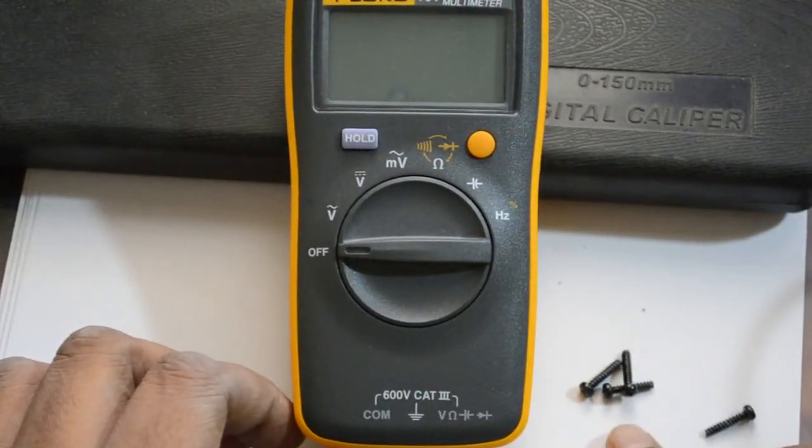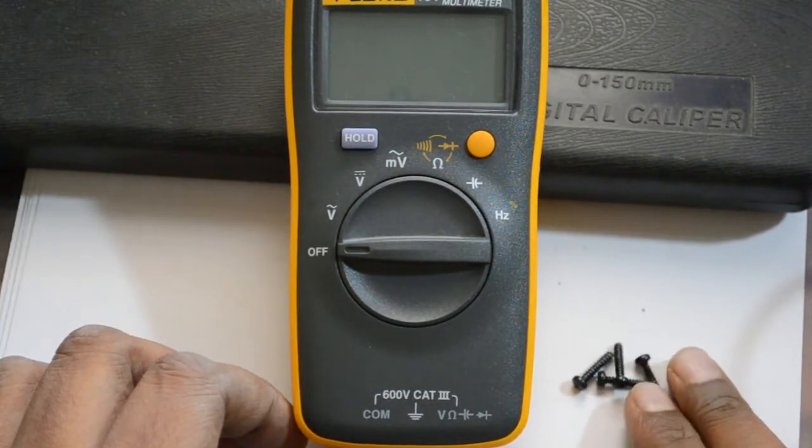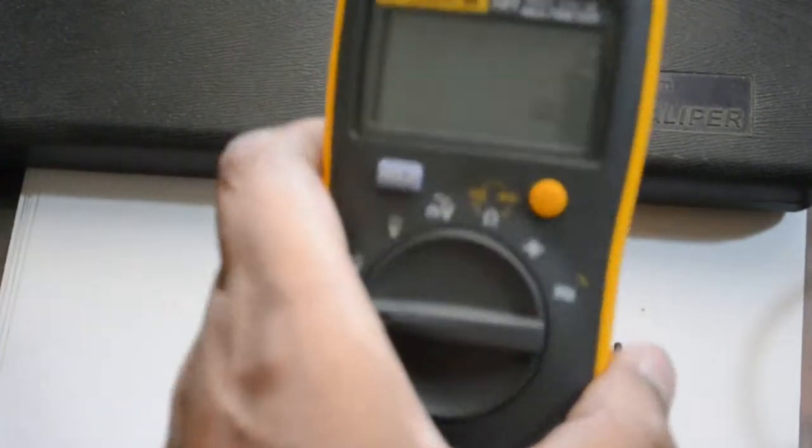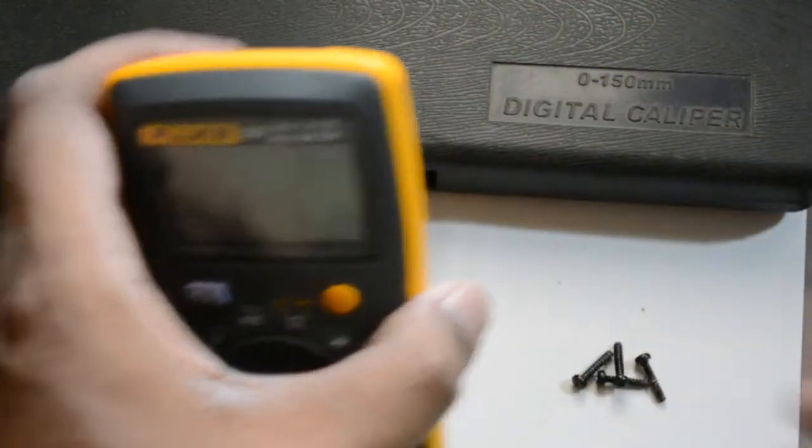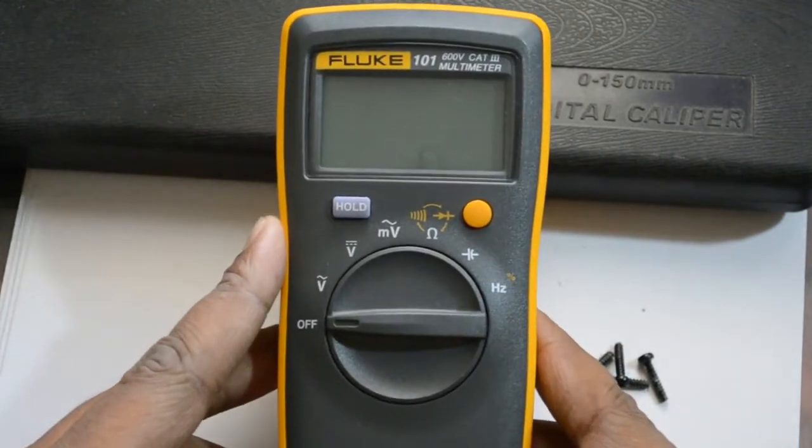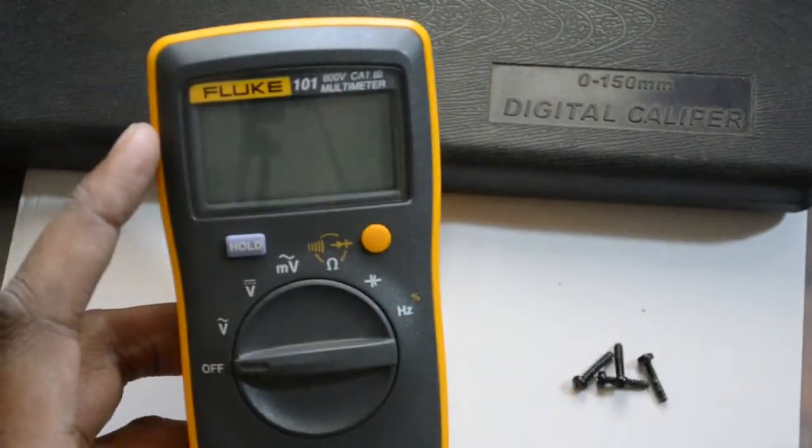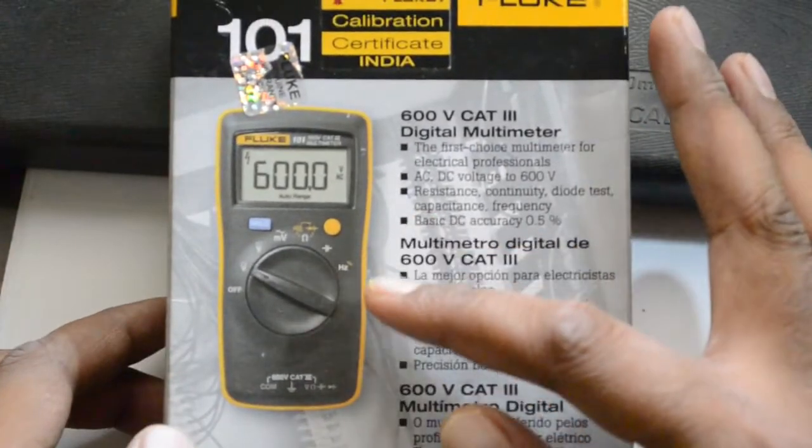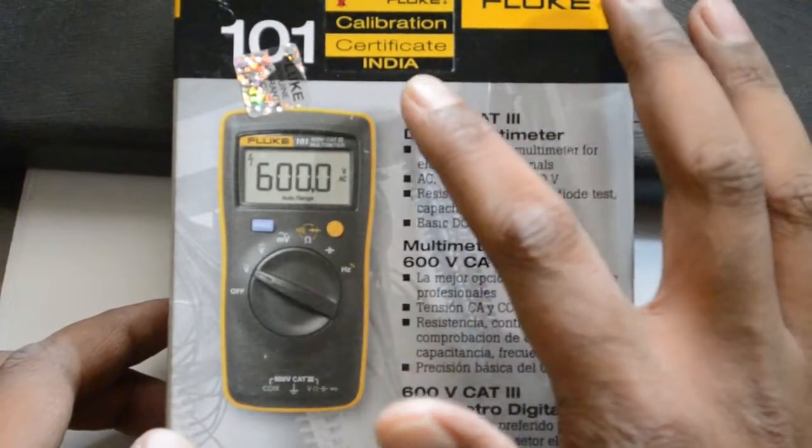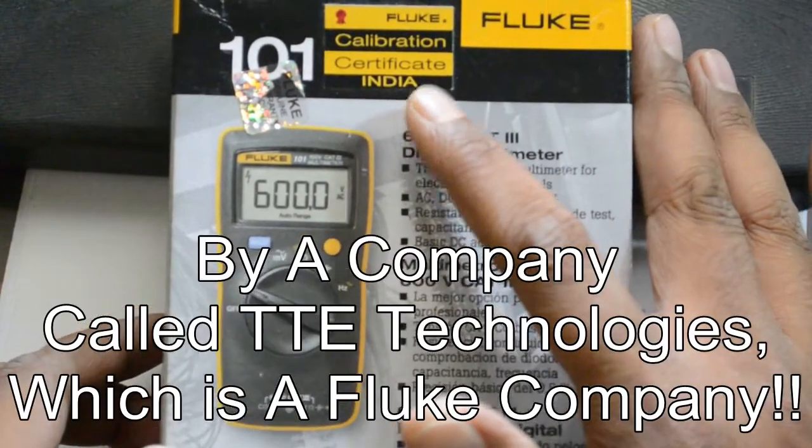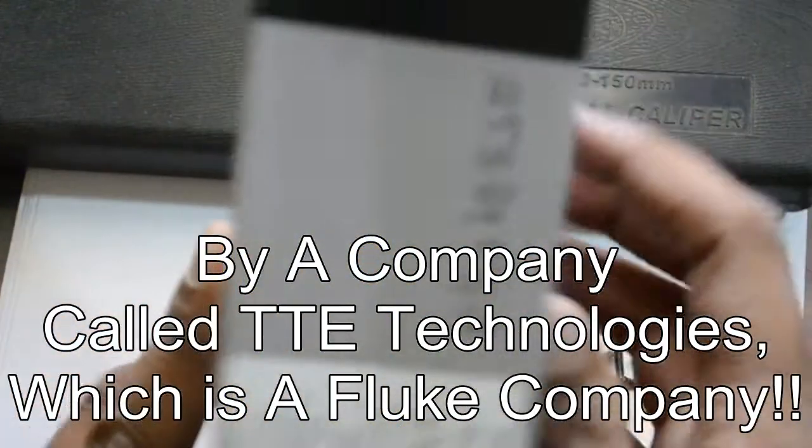I have already removed the four screws that are at the back of this unit. So I will just disconnect everything here so you can just tear it apart. Now what we have here is a basic unit. It came in a very small box which says it's made in China and calibration certificate is from some Indian company. But it says it's made in China on the box.